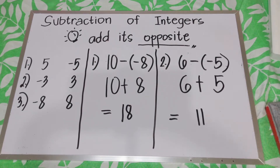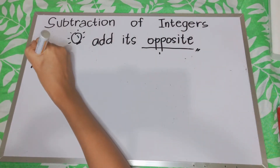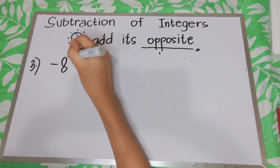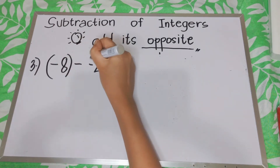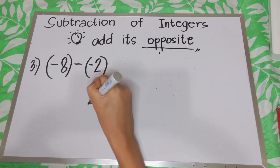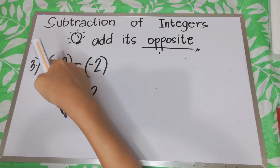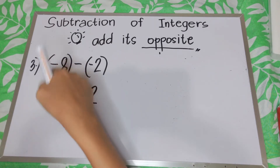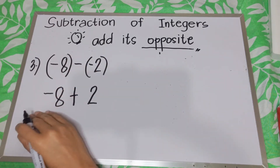Let us have example number 3. Say we have negative 8 minus negative 2. So what is the opposite of negative 2? We have positive 2, then we have to add. Do we need to find the opposite of negative 8? No, negative 8 will remain because it is the minuend. We will have negative 8 plus 2.